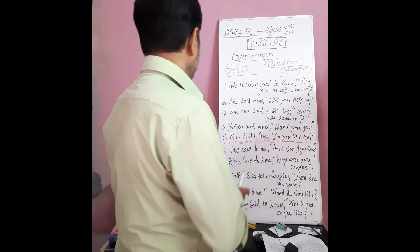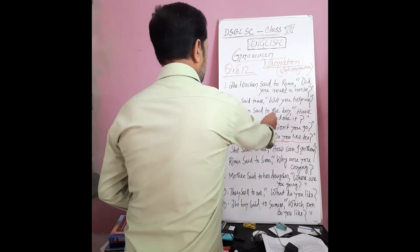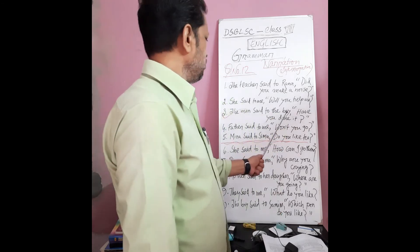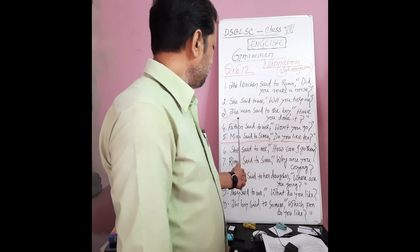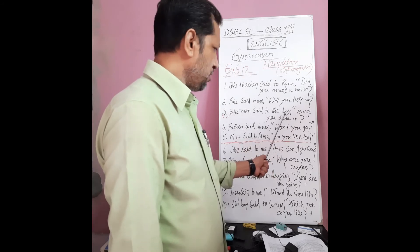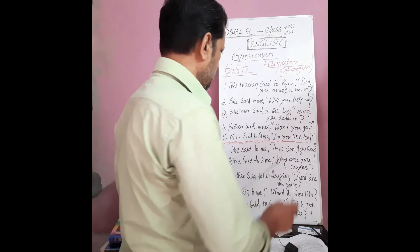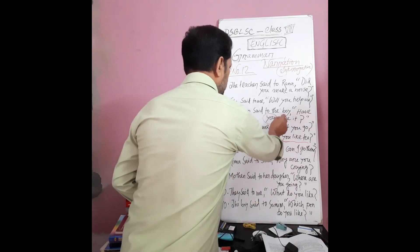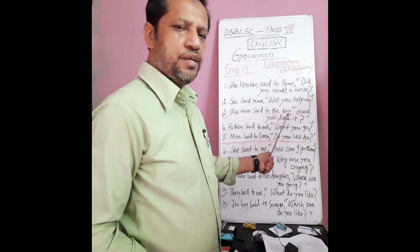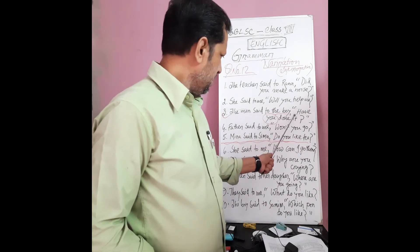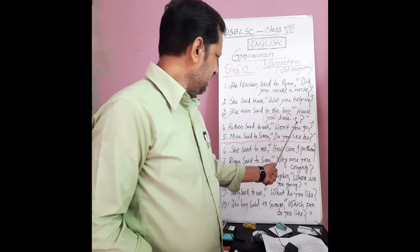Example three: 'The man said to the boy, have you done it?' So: 'The man asked the boy if he had done it.'